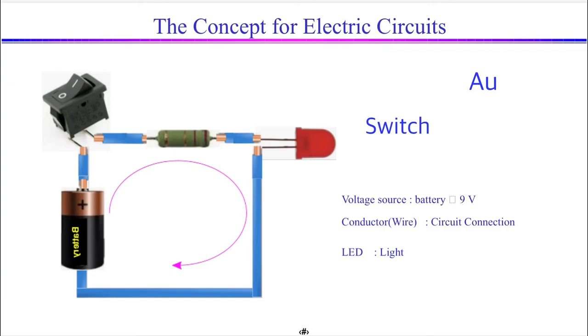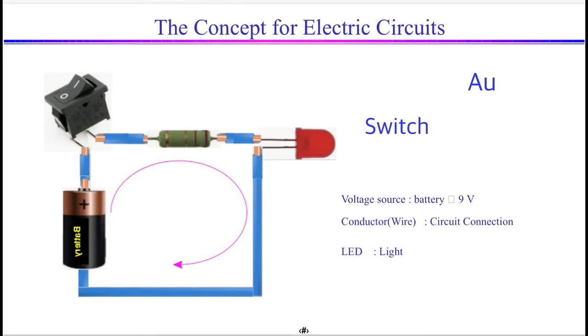So, when the switch is turned on, the current must flow in the closed loop. What happens if we turn off the switch in this circuit? In this case, two wires are disconnected. So, you can say that the circuit is open. For the current to flow in the electric circuit, the circuit must not be open.